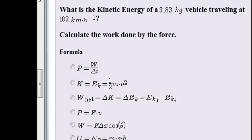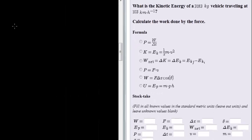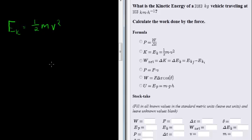What is the kinetic energy of a 3,183 kilogram vehicle traveling at 103 kilometers per hour? Okay, so it's a very simple calculate the kinetic energy problem, and the formula for that is kinetic energy equals half the mass times the velocity squared.